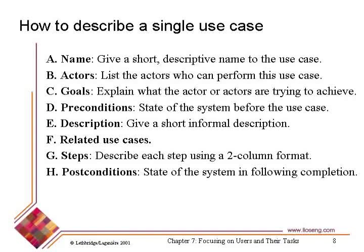The use case finishes when the user achieves their goal — or doesn't achieve it. It's possible for a use case to describe a situation where the user fails to achieve their goal and the final response is the system displaying some kind of error message. You very often have more of those failure cases because there are more ways things can go wrong than things can go right. You can have a use case that describes everything that can go wrong, one for each thing.